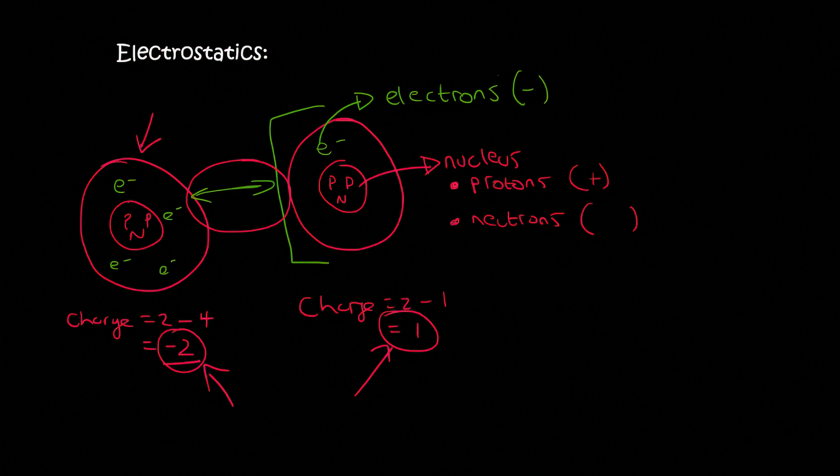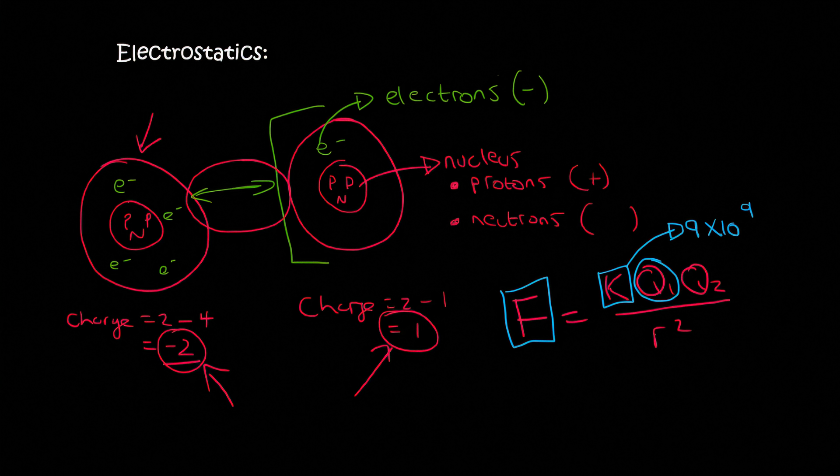So, we have a formula that allows us to calculate that force. That formula is the following. It says that the force between two charges is equal to k, which is a constant that will be given to you on your periodic table. It has a value of nine times ten to the nine. Not your periodic table, on your formula sheet. Q1 is the charge of one of them. So, for example, the two, and then Q2 is the charge of the other one.